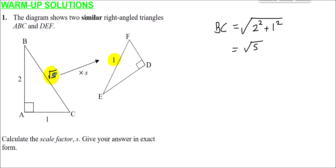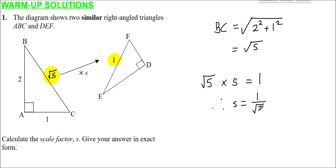What's happened here is that side BC has been shrunk from root 5 to 1. We need to find the multiplicative factor that takes something from size root 5 to 1. So root 5 multiplied by s equals 1, meaning with a simple rearrangement s must be 1 divided by root 5. If we rationalize the denominator by multiplying both top and bottom by root 5, we get s equals root 5 over 5.